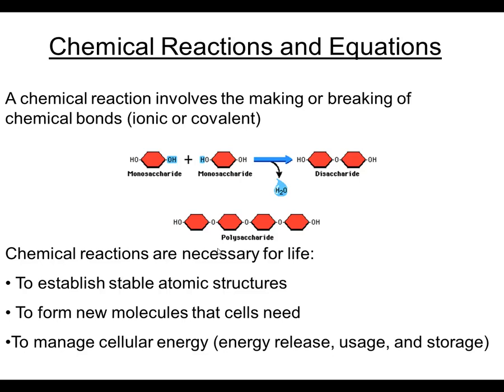Also, new molecules that cells need are oftentimes formed by these chemical reactions. With the formation of disaccharides and polysaccharides, these are the kinds of reactions going on inside plant cells right after photosynthesis, so that they can produce sucrose, which is a disaccharide used for transport of the sugars, and polysaccharides like starch, which is used for storage of the sugars.